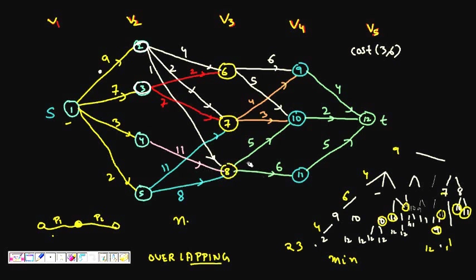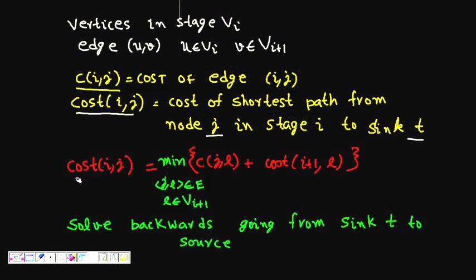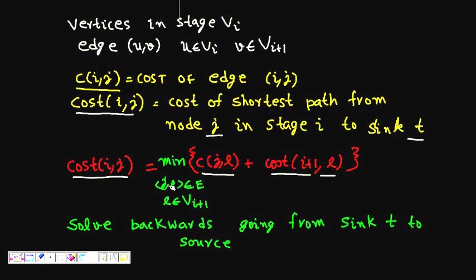Formally, cost(i,j) — the cost of the shortest path from node j to sink t, where j belongs to stage i — equals the minimum over all edges (j,l) of: c(j,l) plus cost(i+1, l), where l is a node in stage i+1. This recurrence relation will help us solve the problem.